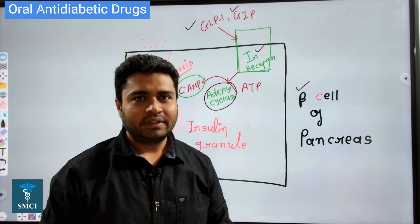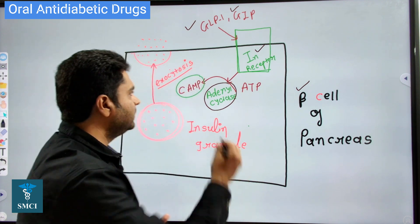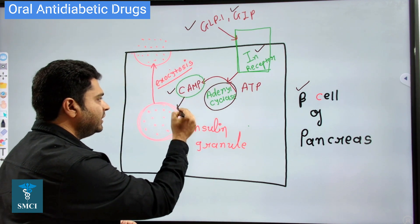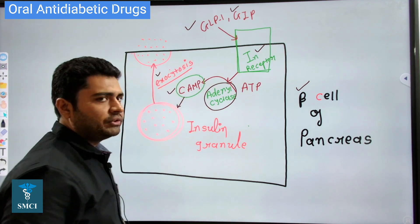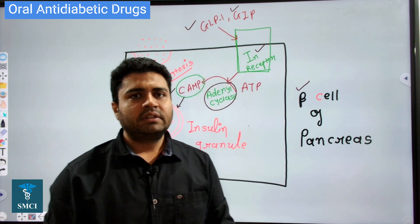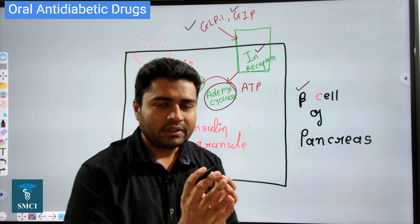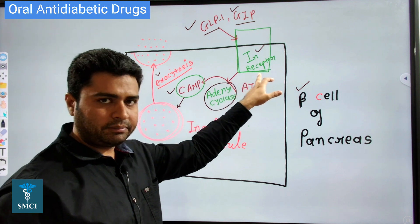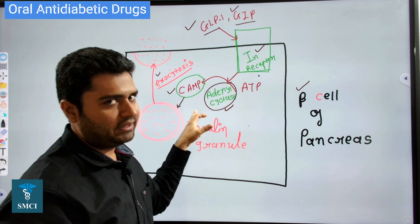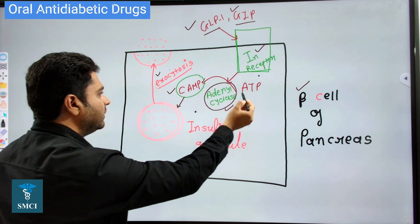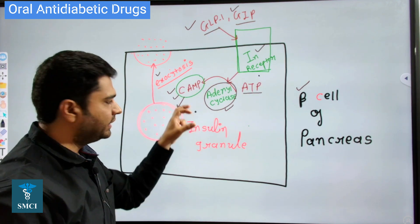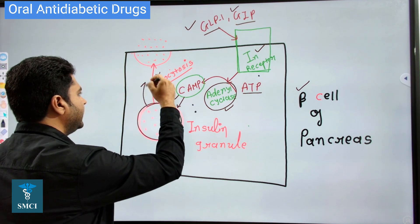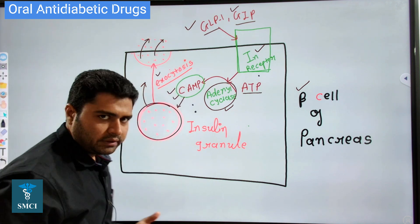When GLP and GIP bind the incretin receptor, it activates an enzyme called adenyl cyclase. Adenyl cyclase converts ATP into cyclic AMP. This cyclic AMP then initiates exocytosis of the insulin granules that are already present in the beta cells, releasing insulin into the blood.